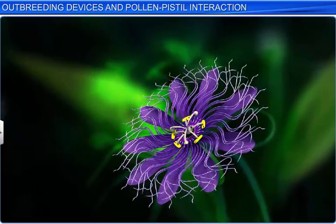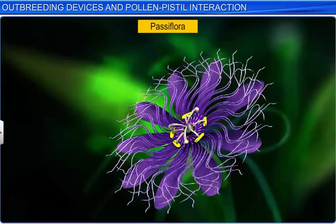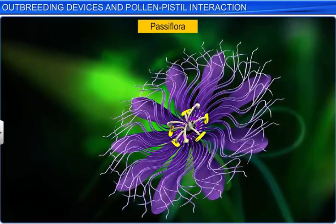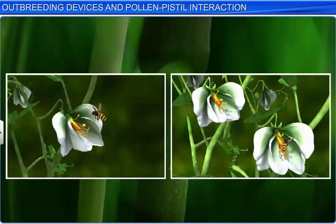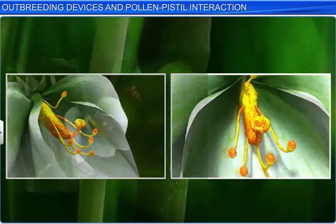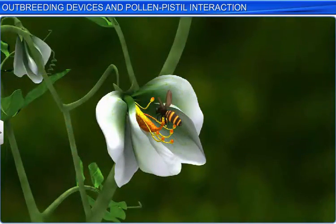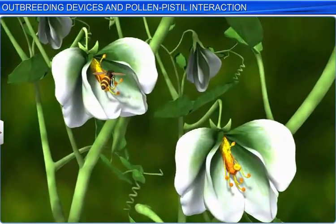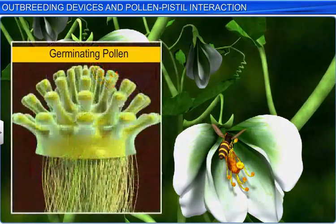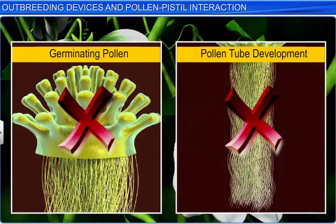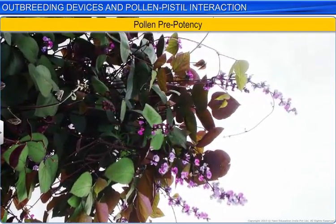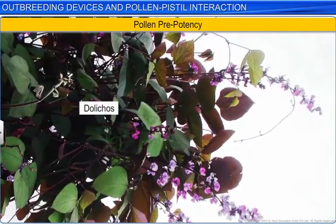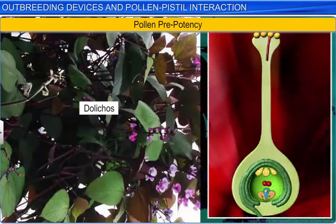Other plant species such as passiflora have developed a genetic mechanism called self-incompatibility or self-sterility. Adept at preventing both autogamy and geitonogamy, self-incompatibility prevents self-pollen — that is, pollen from the same flower or different flowers born on the same plant — from germinating or developing a pollen tube, thereby preventing fertilization of the egg. Pollen prepotency is another mechanism that prevents self-pollination in certain plants such as Dallicus, allowing pollen from another plant of the same species to germinate earlier than the pollen of the same flower.